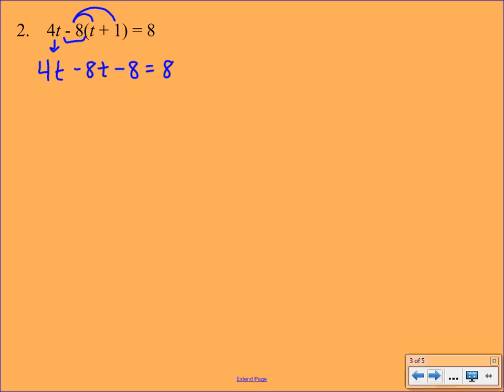Okay. So our first step, simplify the equation we just distributed. Now we notice that we have variables that are on the same side of the equation. So we're going to combine those. 4t minus 8t will give us the negative 4t. Everything else comes down. And now we don't have variables on both sides. So we can skip that next step. And we're basically just looking at a two-step equation.